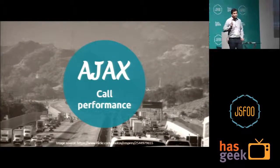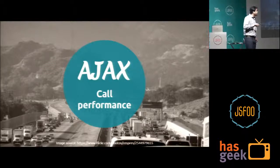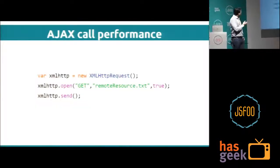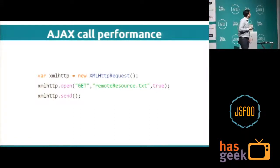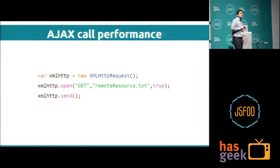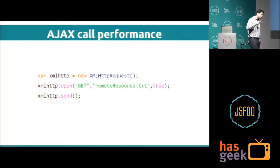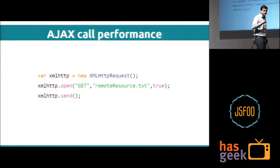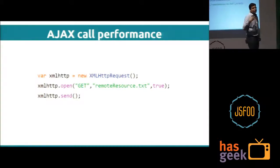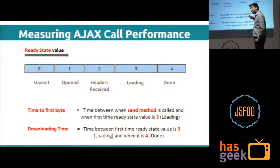After covering page load performance, let's move to AJAX call performance. Here is a well-known code showing how to make an AJAX call: three simple steps — make an XMLHttpRequest object, then call open and send methods. If through some way I can intercept the open and send methods, I can calculate the timing between opening the connection and fully downloading the content. We use the monkey patching technique for this.